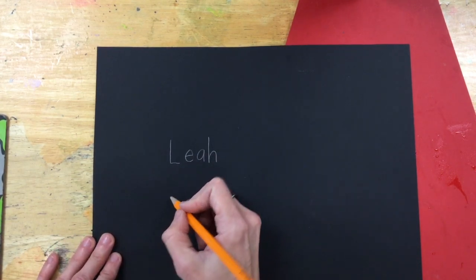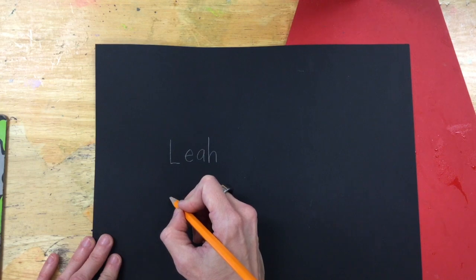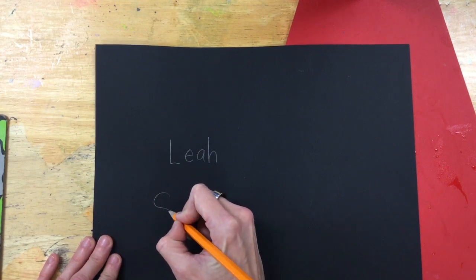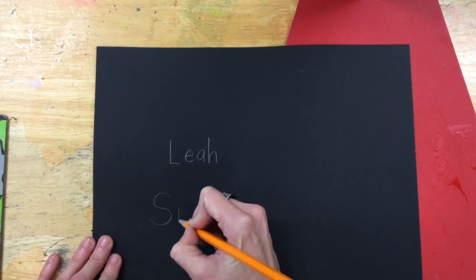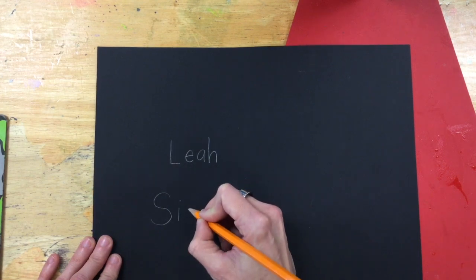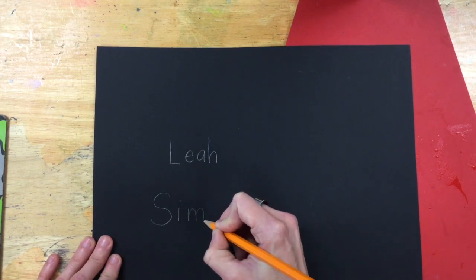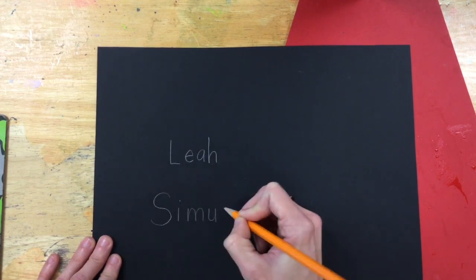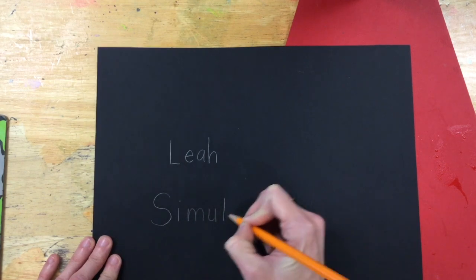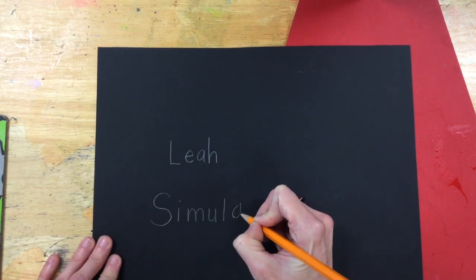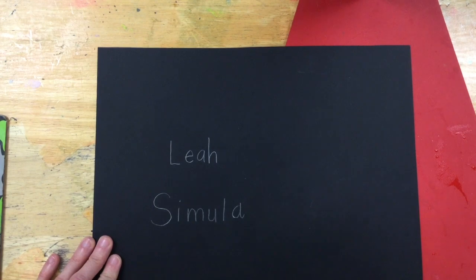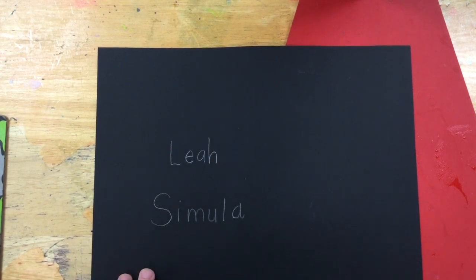So let's practice writing Miss Simula's name. So it's S-I-M-U-L-A. Great job! Now we're going to flip our paper over like a pancake.